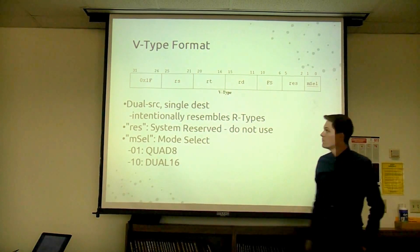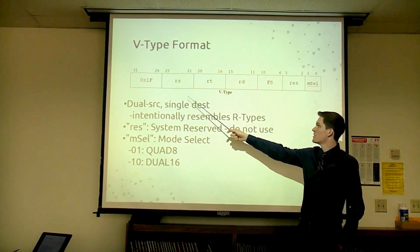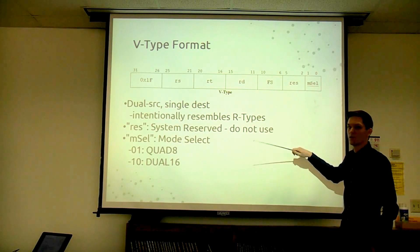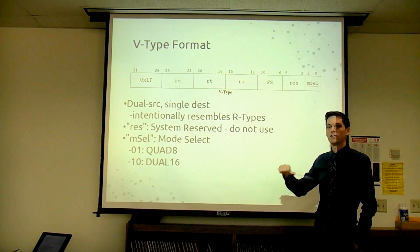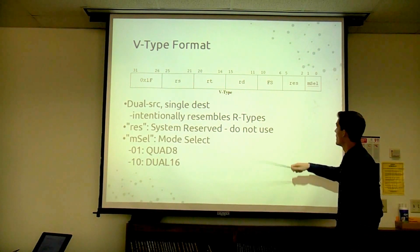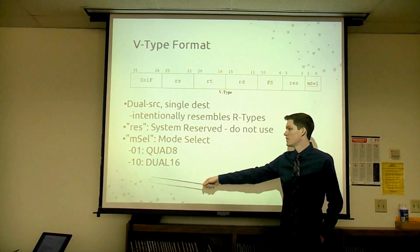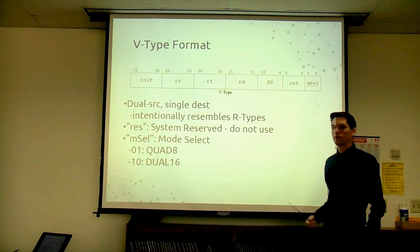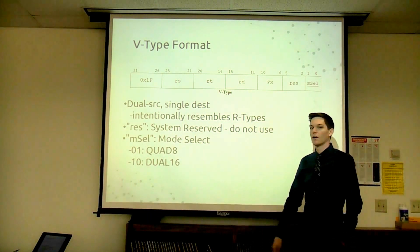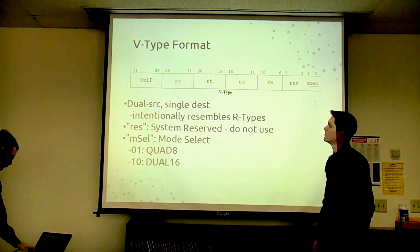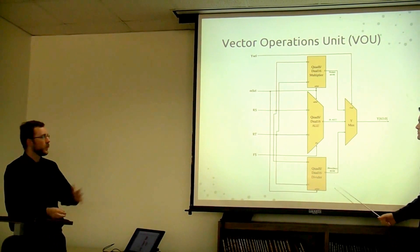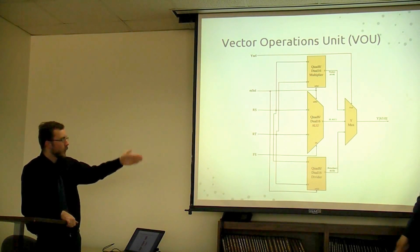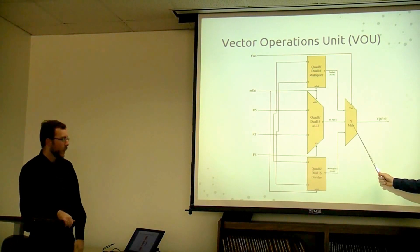The V type format has 1F as the E-key, then RS and RT fields for source registers, RD for destination, and function select using bits 6–10. Bits 2–5 aren't used yet but can later support a barrel shifter per lane. Mode select is two bits: 0-1 uses Quad 8, 1-0 uses Dual 16. We're using two bits because later 0-0 could be a standard ALU type running in parallel — able to do standard operations as well as Dual 16 and Quad 8. The vector unit looks similar to the regular ALU with a dual-mode multiplier, dual-mode ALU, and dual-mode divider all going into a YMUX.